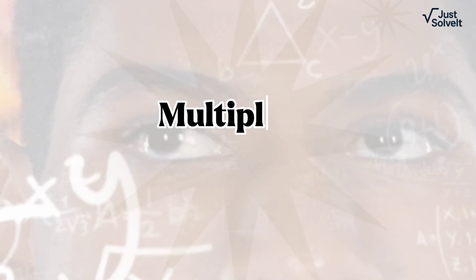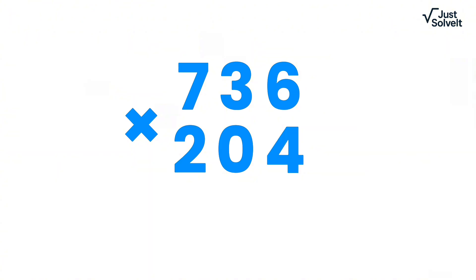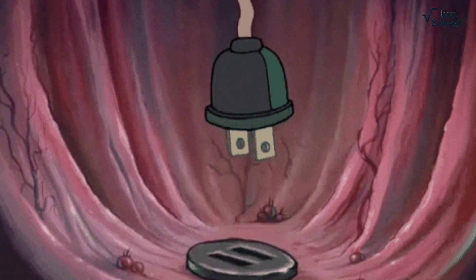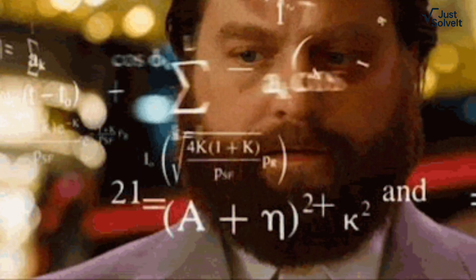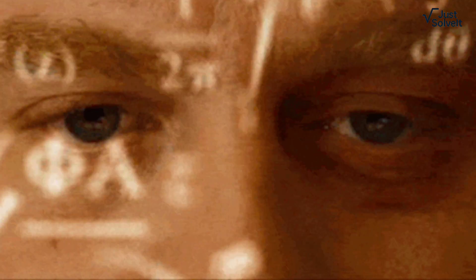Have you ever thought multiplying two three-digit numbers like 736 times 204 in your head was only for math geniuses? Well, what if I told you that you can do it too in just five seconds using a simple trick that's faster than a calculator?